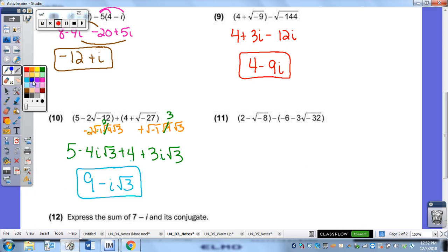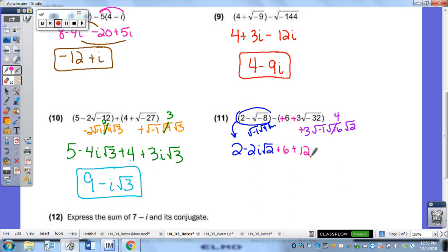Over here for 11, the first thing I'm going to do is clean up my radical 8. So, for this parenthesis, it turns into 2 minus 2I radical 2. So, then for my next one, same thing with my 32. I'm going to clean that up. 16 and 2. 16 comes out as a 4. But the other thing I forgot to do first was distribute my negative. So, this 6 is now positive. This 3 is now positive also. So, I get plus 12I radical 2. So, then last step, combine my like terms. 2 plus 6 is 8. Negative 2I plus 12I is a positive 10I radical 2.